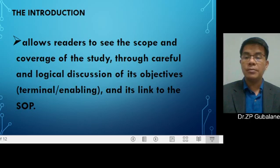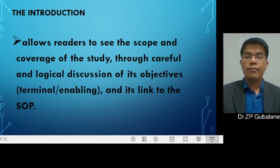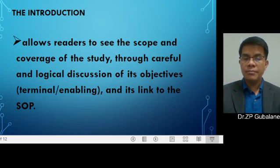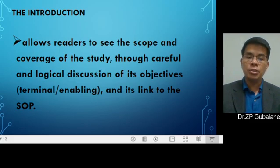Number one is the terminal objective. The terminal objective refers to the ultimate intention or output of your study. Number two is enabling objectives — these are the objectives that support the terminal objective to be realized. Without enabling objectives, the terminal objective could be impossible. So there is a helping and supporting relationship between terminal and enabling objectives.